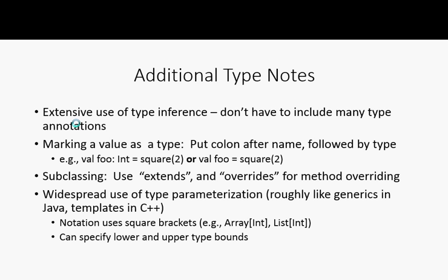In the code I've given you I've tended to mark things with types so you can see what they are easily, but I could probably strip out 90 to 95 percent of those declarations by allowing the compiler to do the work. For subclassing, we're in familiar territory — it's a C-family language and you use 'extends'. If a method overrides another method you're inheriting from a superclass, you will need to say 'override'. In many Java versions that was optional, but here it's required.